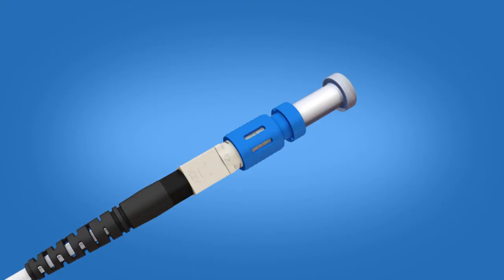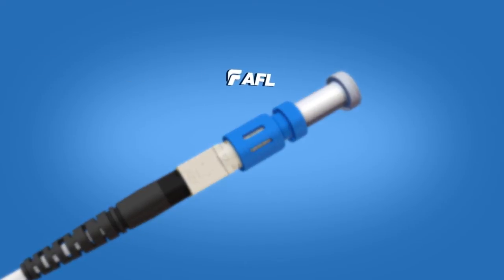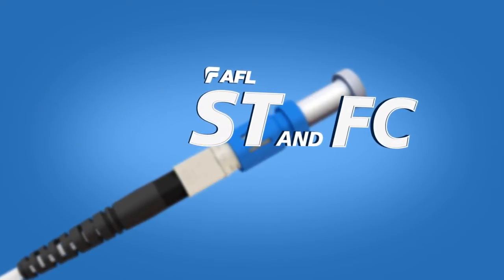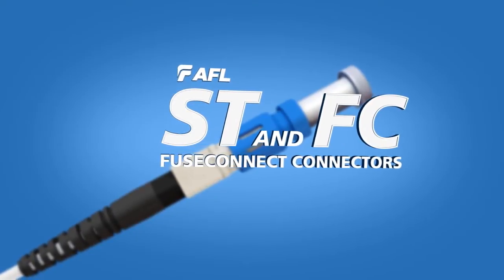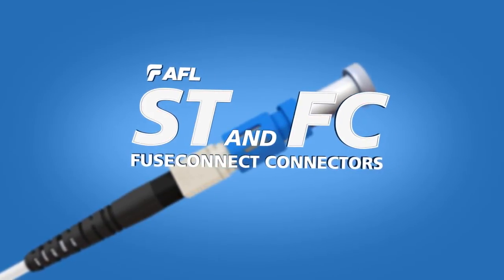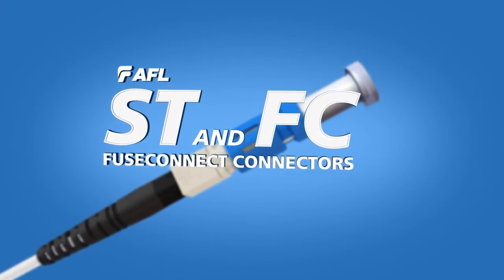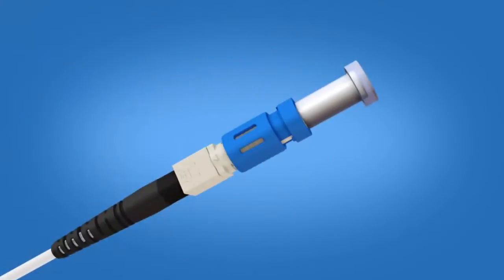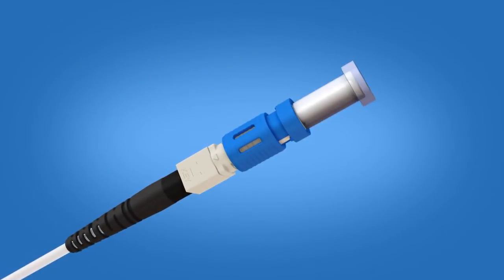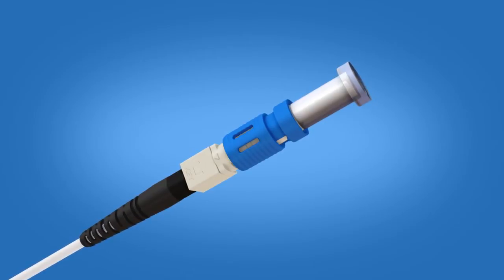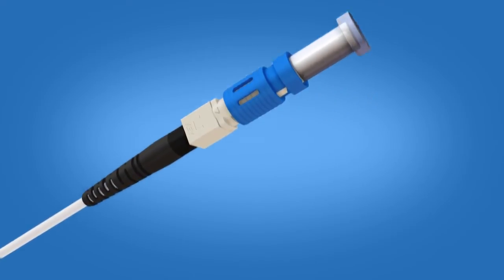This installation video is applicable for AFL's splice-on ST and FC fuse connect connectors on two and three millimeter diameter simplex cable. These step-by-step instructions demonstrate the termination of a three millimeter ST fuse connect connector using a Fujikora 70S fusion splicer.